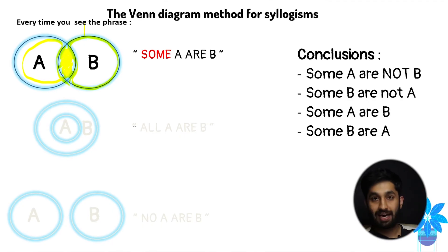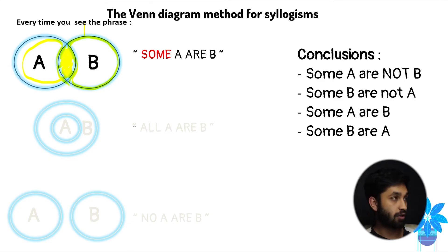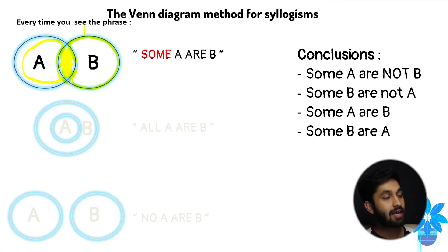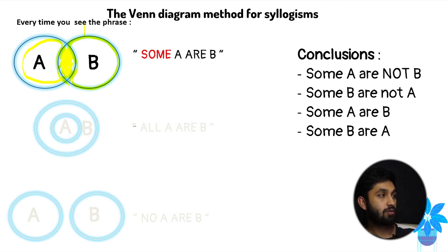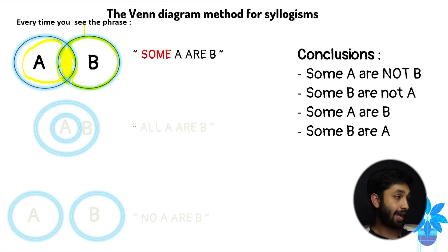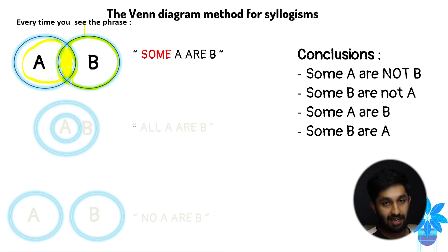In the exam you'll get a series of conclusions and you'll have to assess each one whether they follow the Venn diagram or the two premises given. These are the conclusions that actually do follow the statement 'some A are B'. You could possibly memorize these, but with practice you'll recognize them instantly, or you can work it out on the spot using this technique.